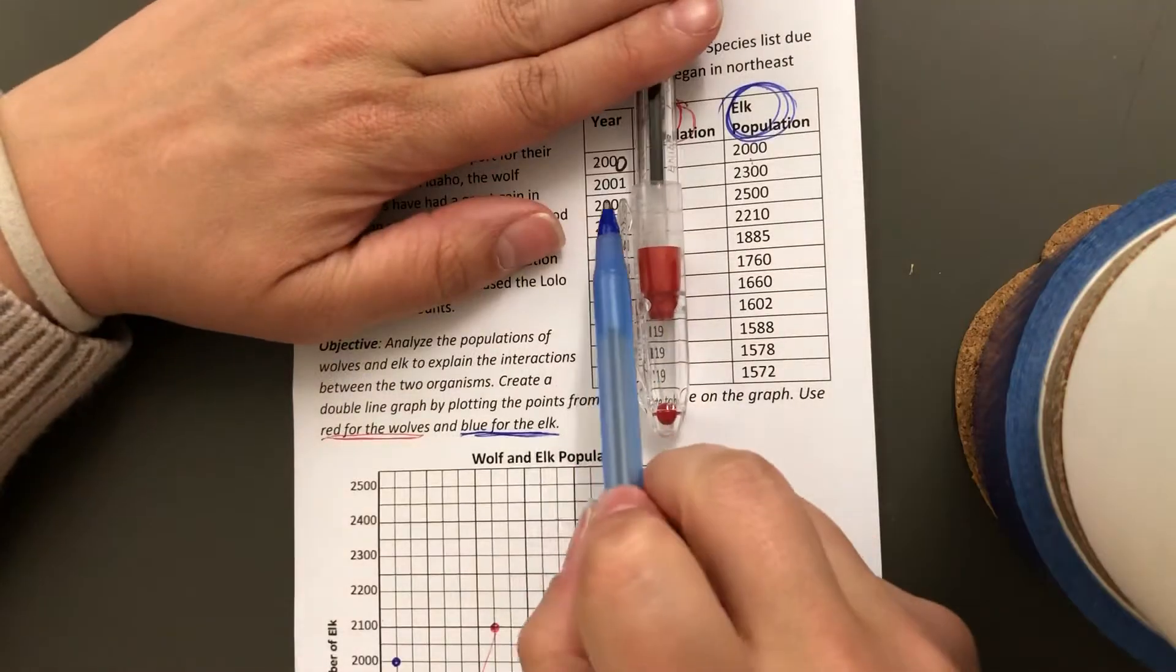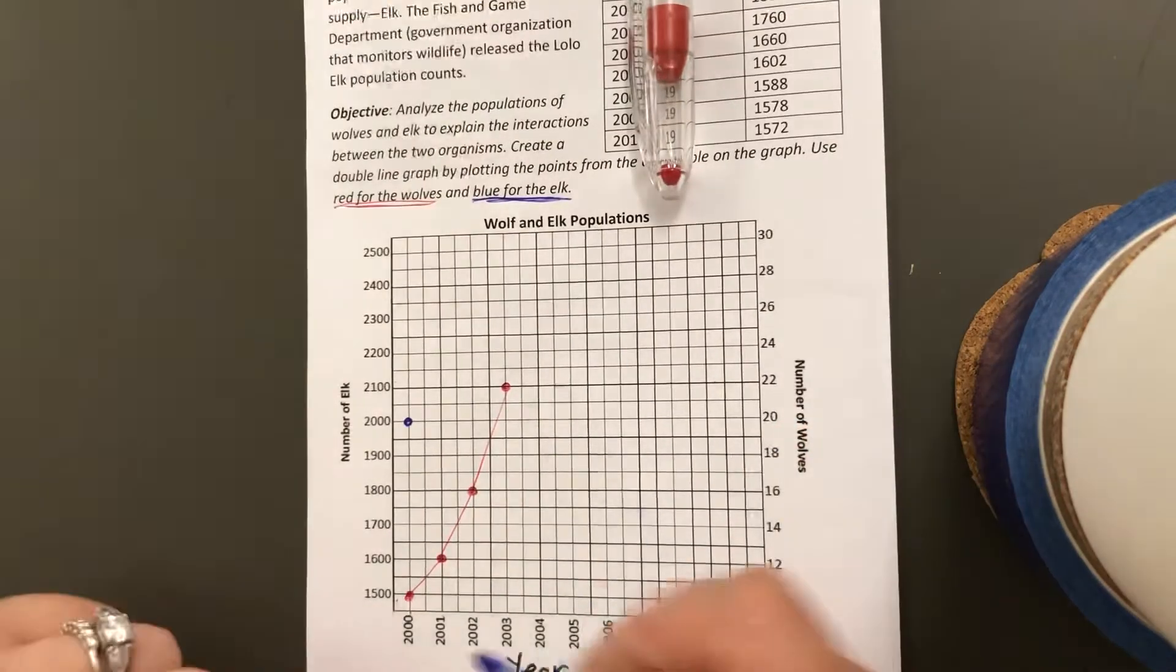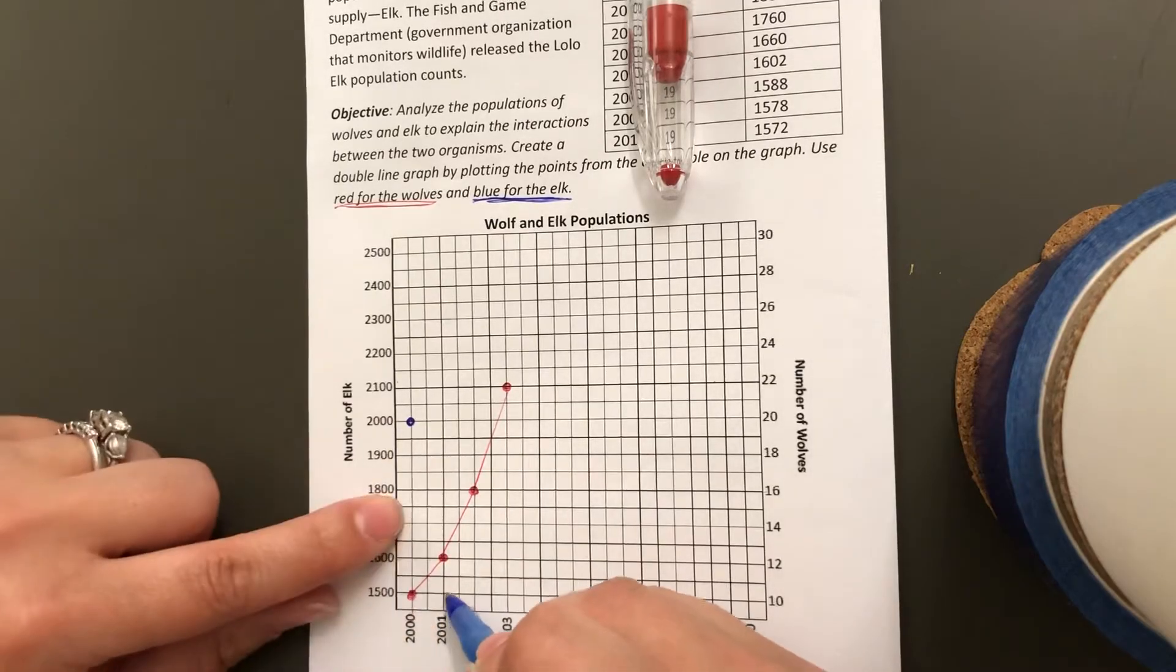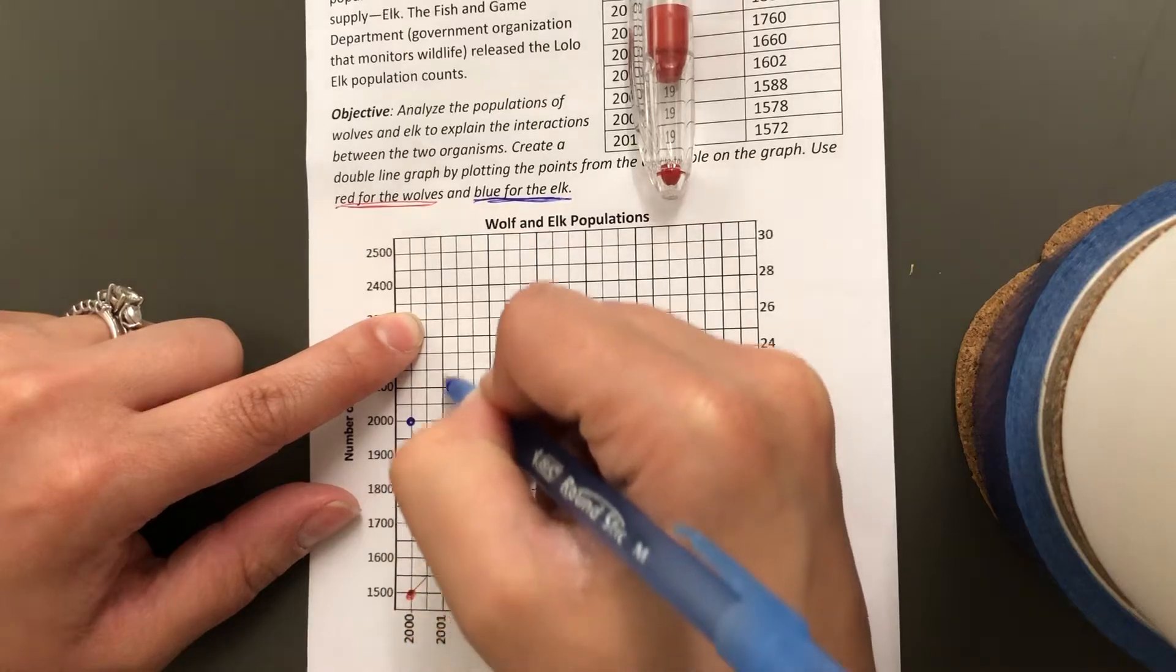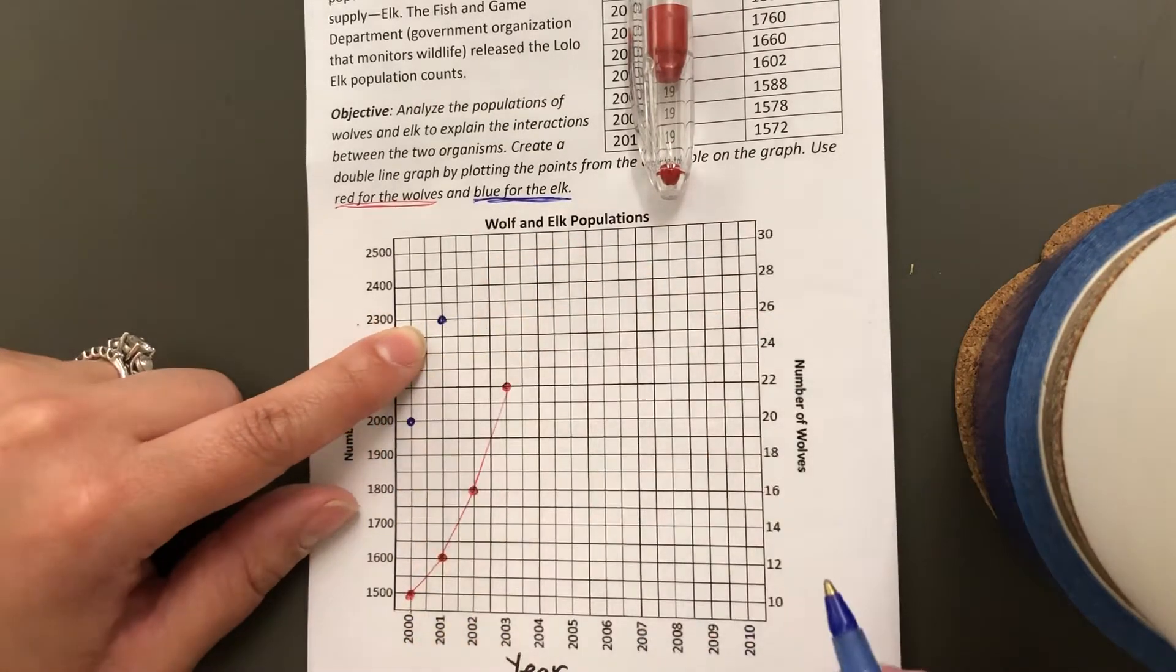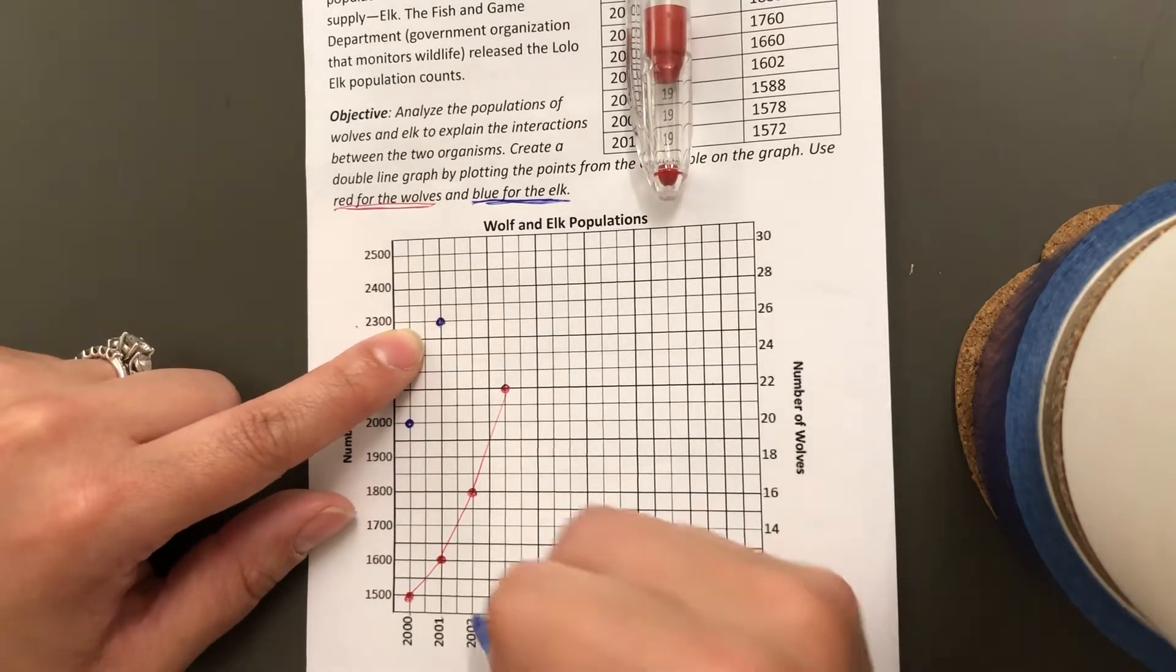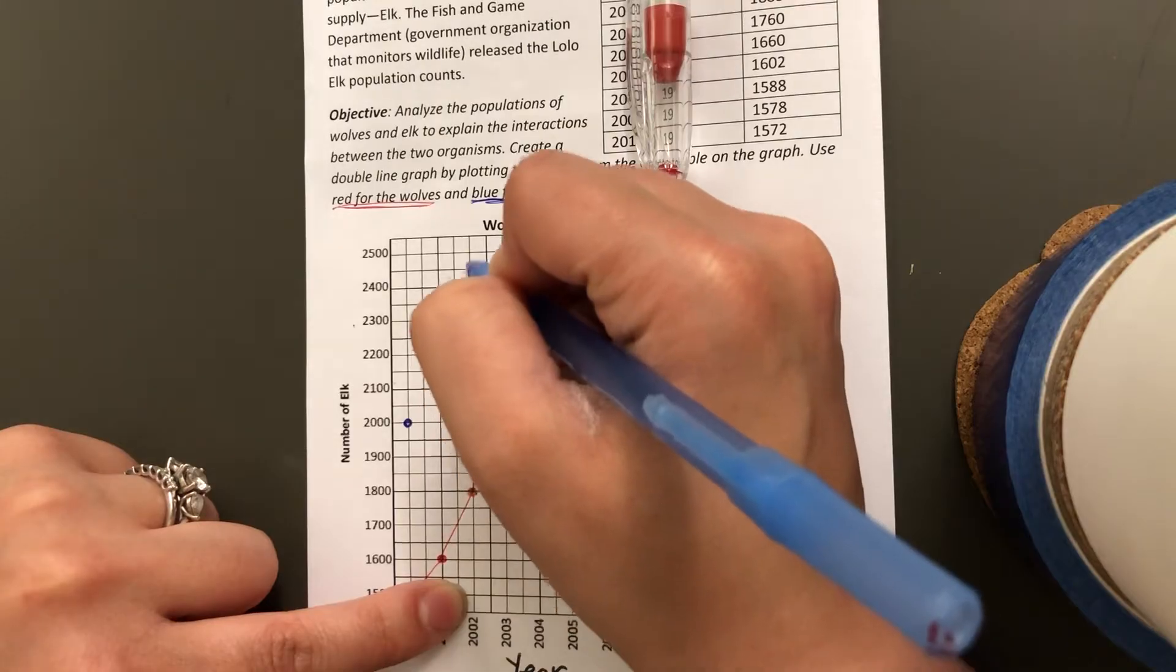The next point is in 2001, it was 2,300. Draw my dot. In 2002, it was 2,500.